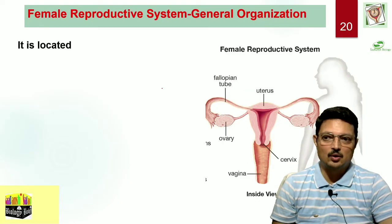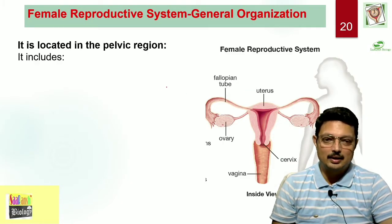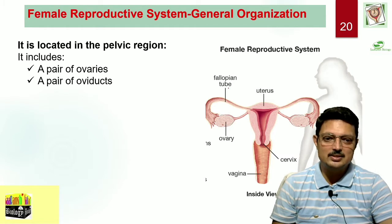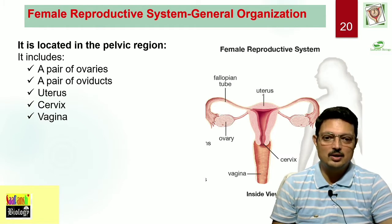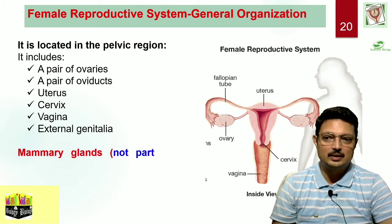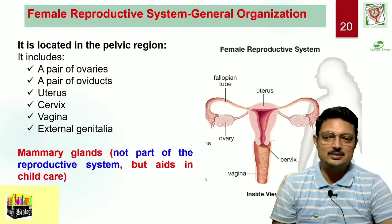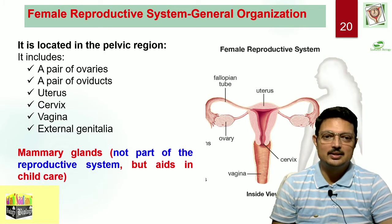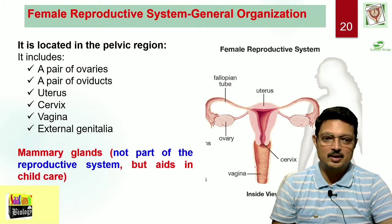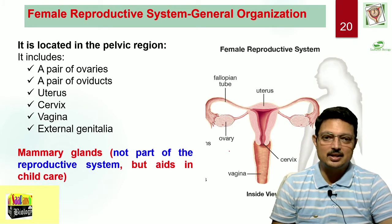The gross organization of the reproductive system is like this: we have a pair of ovaries, then a pair of oviducts, a single uterus leading to cervix, cervix leading to vagina, and followed by external genitalia. The mammary gland, as already discussed, is not a part of the reproductive system but aids in child care.